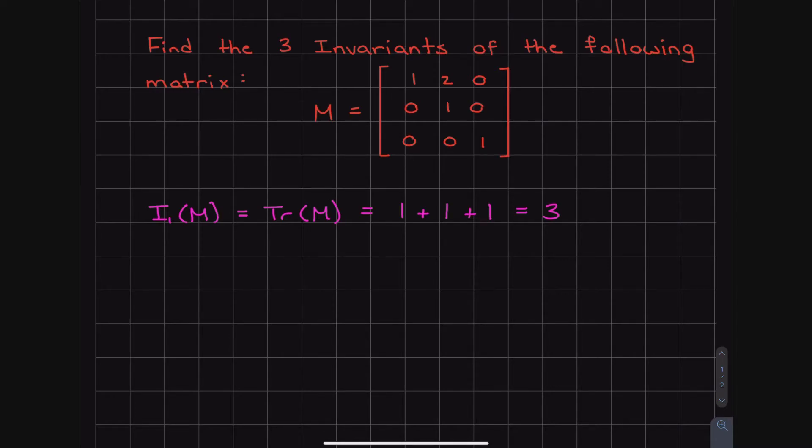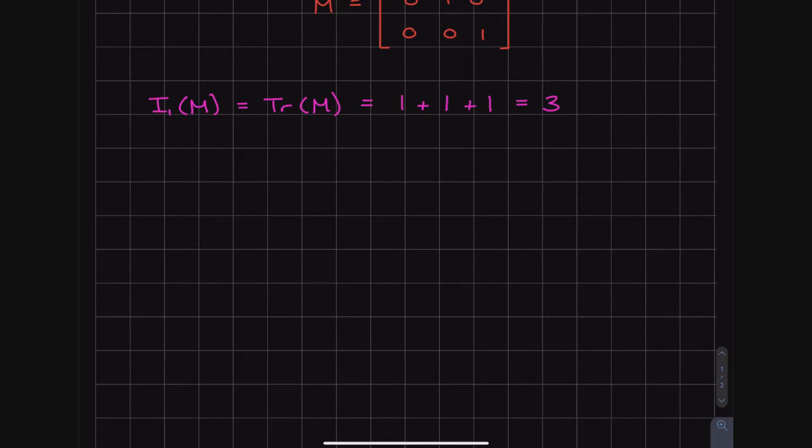But then invariant 2, this is when things get a little bit more challenging. So we come down and we're just going to write the formula for invariant 2. So I2 of M is going to be equal to 1 half. So 1 half is just a number. We shouldn't be scared of that. Times I1 of M squared. And we just defined this above. So we already know that I1 of M is 3. And then minus invariant 1, so we're going to need the trace of matrix MM. The only thing that we're going to need to find is what is I1 of MM?